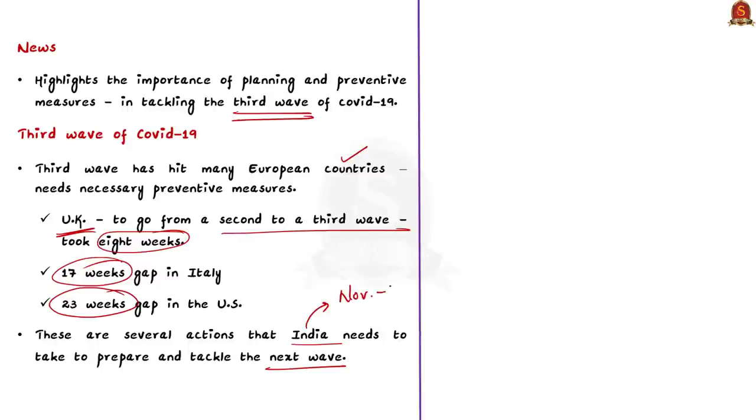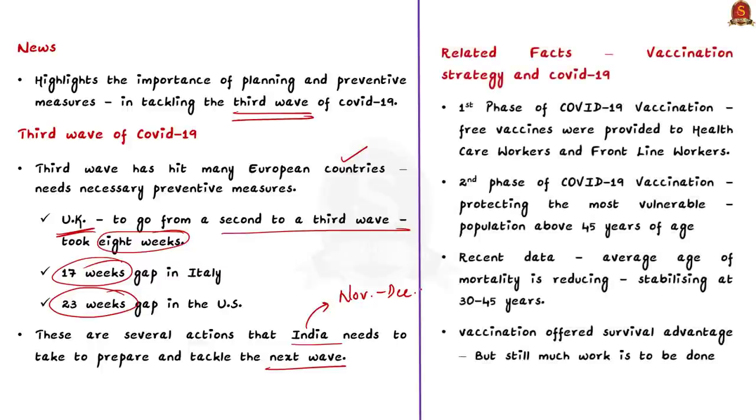India needs to take several actions to prepare and tackle the next wave. Before discussing the suggestive measures, let us know a few facts related to the vaccination policy and the second wave of COVID-19 pandemic. During the first phase of COVID-19 vaccinations, free vaccines were provided for healthcare workers and frontline workers. During the second phase of vaccination, vaccines were provided for the vulnerable section of population. For example, population more than 45 years of age, which accounted for 80% of COVID mortality, were given vaccines during this period.